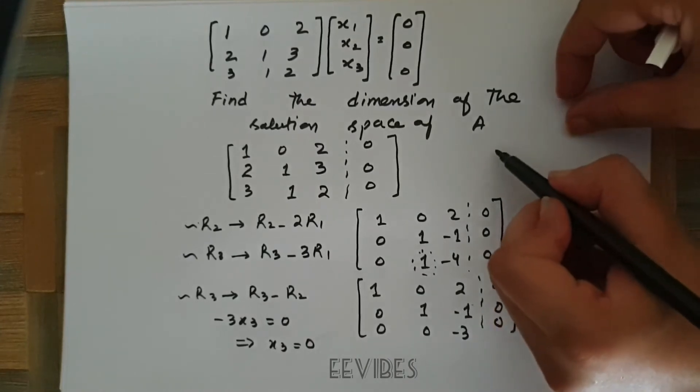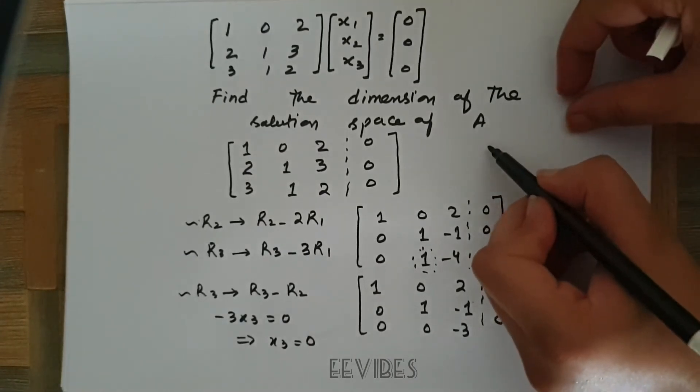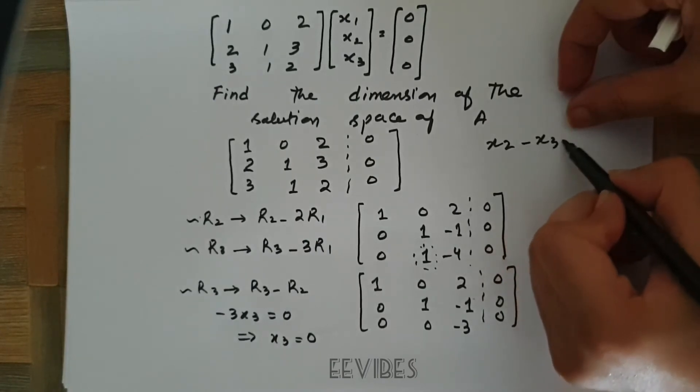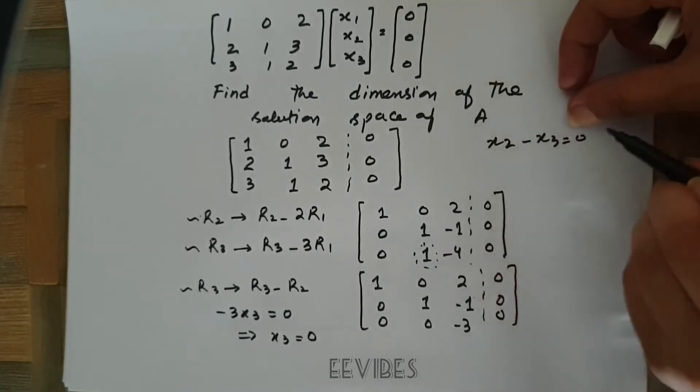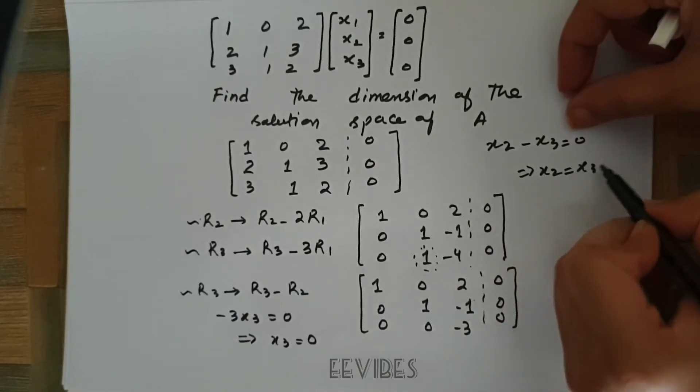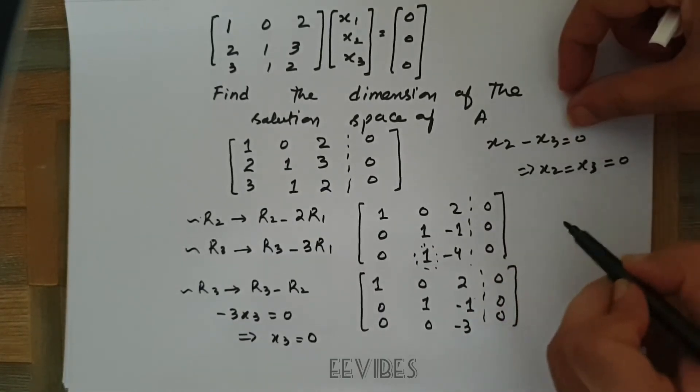The next equation that we will get is x2 minus x3 is equal to 0. So this will give me x2 is equal to x3, which is also equal to 0.